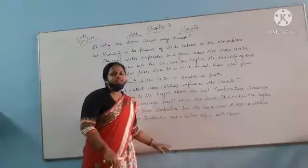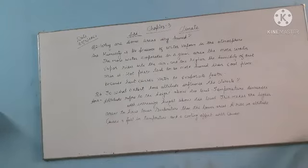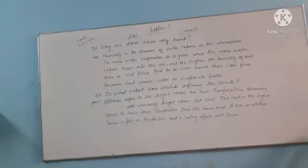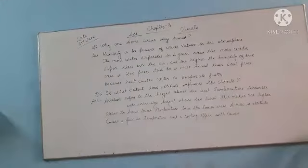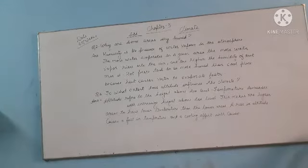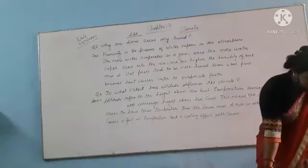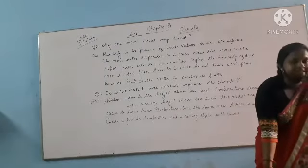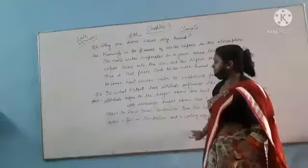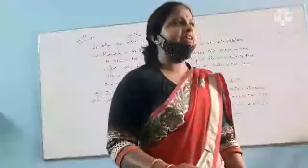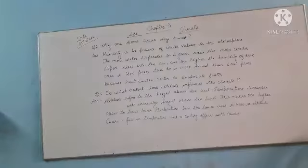So these are the two question answers. Just note them down in your fair copy — write these two question answers neatly and cleanly. Very soon we will discuss the next question. The third question is: how does the distance of a place from the sea affect the climate? Write that question after these two answers in your fair copy.